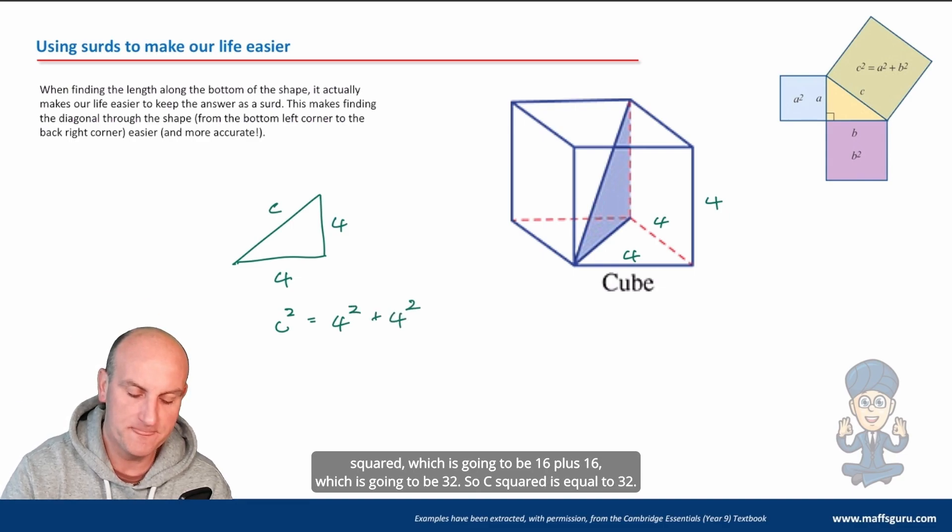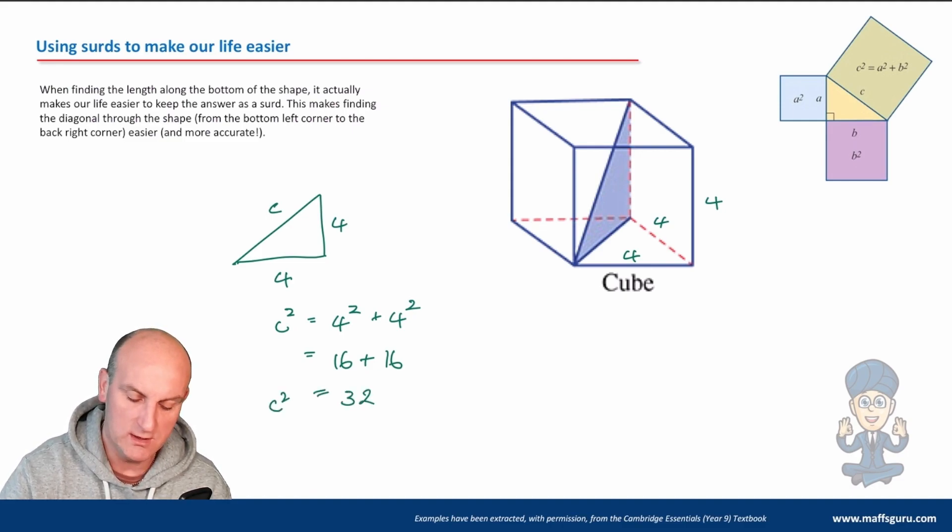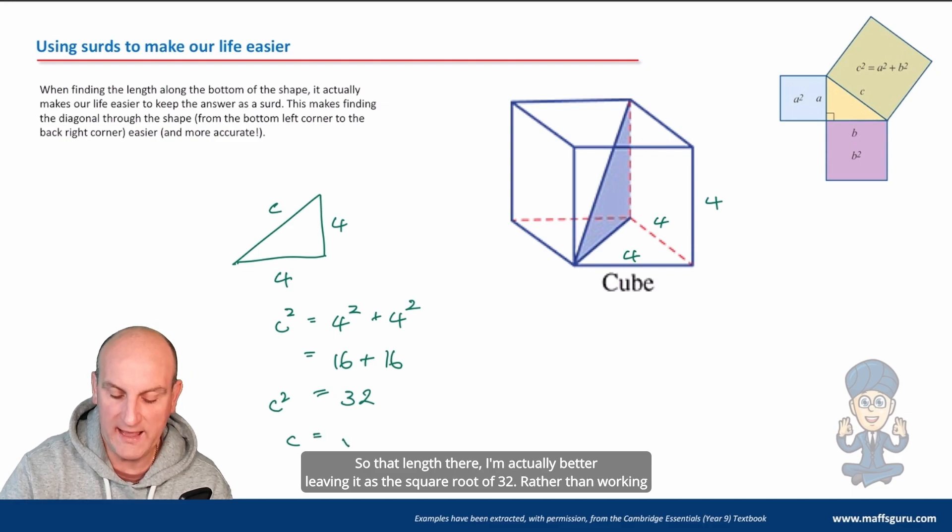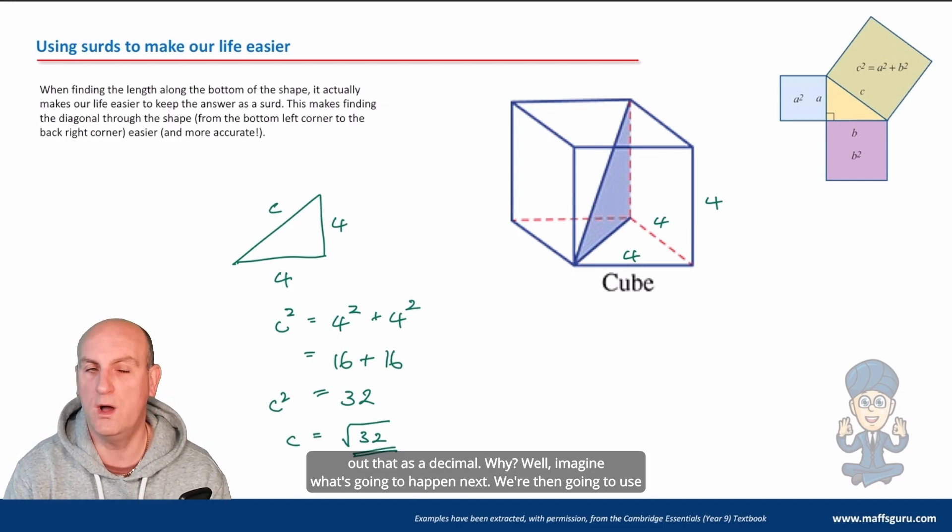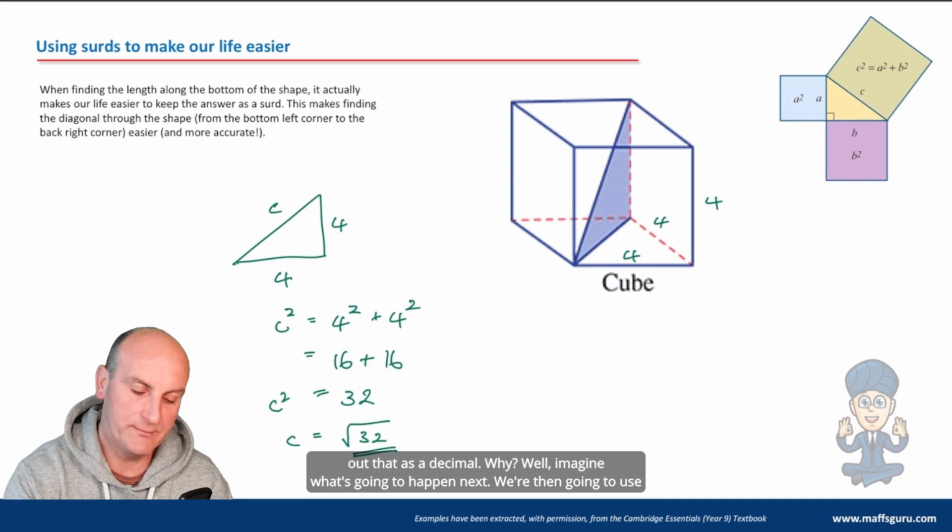Well yes I can. c squared is going to be four squared plus four squared which is going to be 16 plus 16 which is going to be 32. So c squared is equal to 32. So that length there I'm actually better leaving it as the square root of 32 rather than working out that as a decimal.